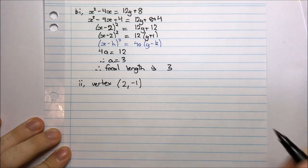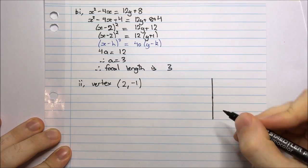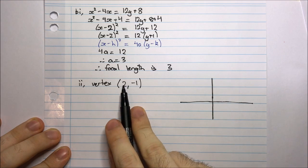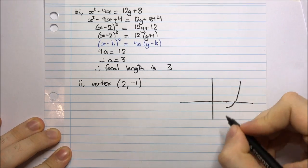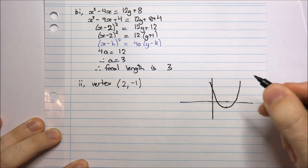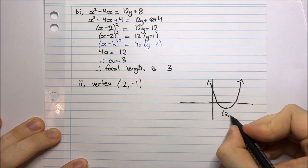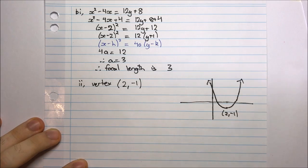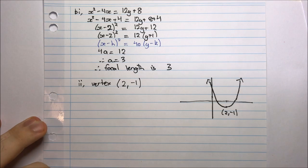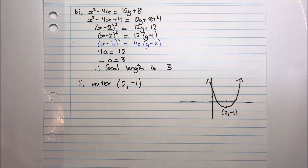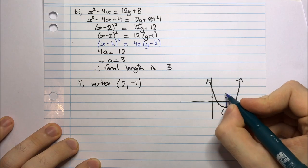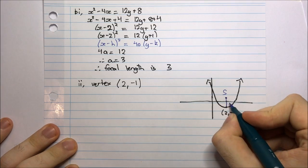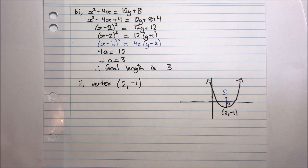My parabola looks something like this — I have my vertex at (2, -1), somewhere down here, and it just goes upward. So this is (2, -1). The focus will be a units above the vertex — somewhere maybe here. The focus S has a distance of a units from the vertex — that's what we call the focal length, the distance from the vertex to the focus.